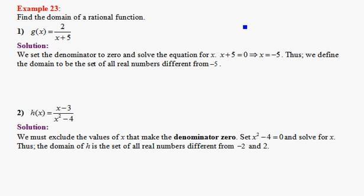Find the domain of a rational function g(x) = 2/(x+5). A rational function is a function that always has a numerator and a denominator. To find the domain of such a function, we will always set the denominator equal to 0 and solve for x. So we're going to set x + 5 equal to 0.